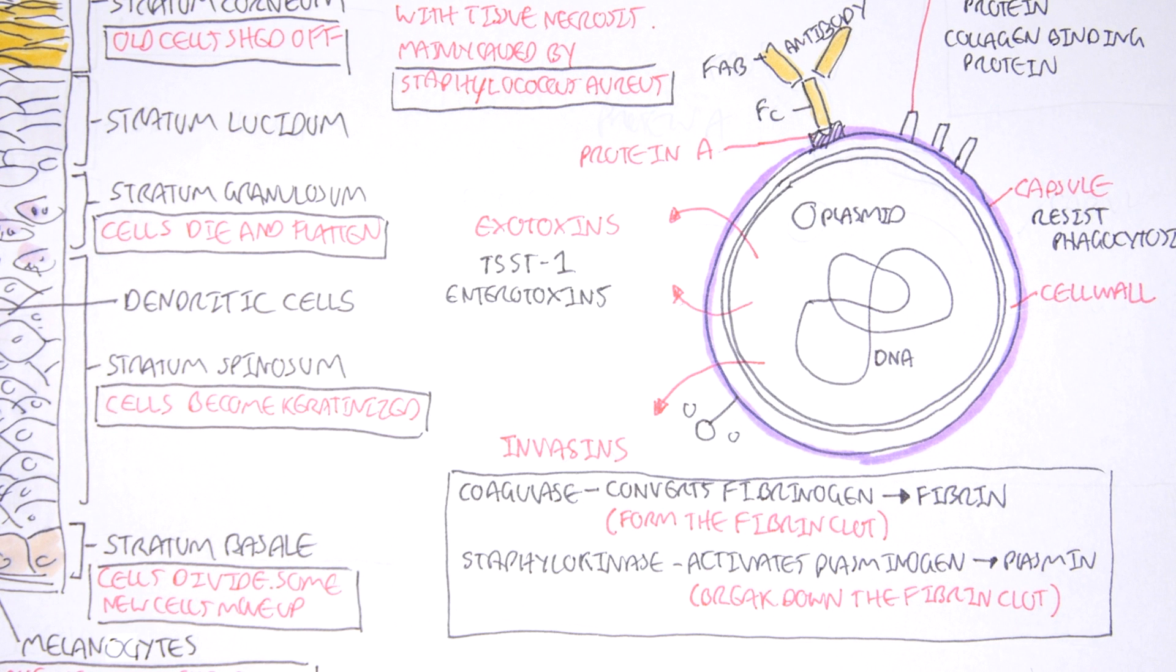So just to recap, coagulase will help the bacteria form a fibrin clot. Staphylocokinase will help the bacteria break a fibrin clot.